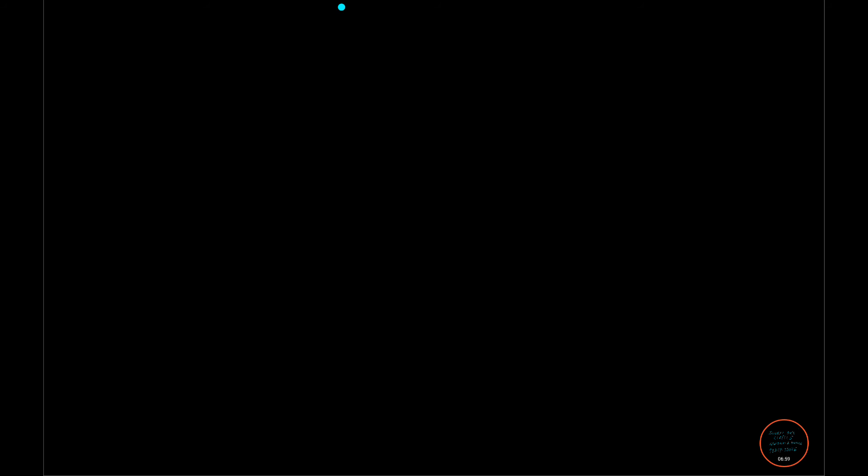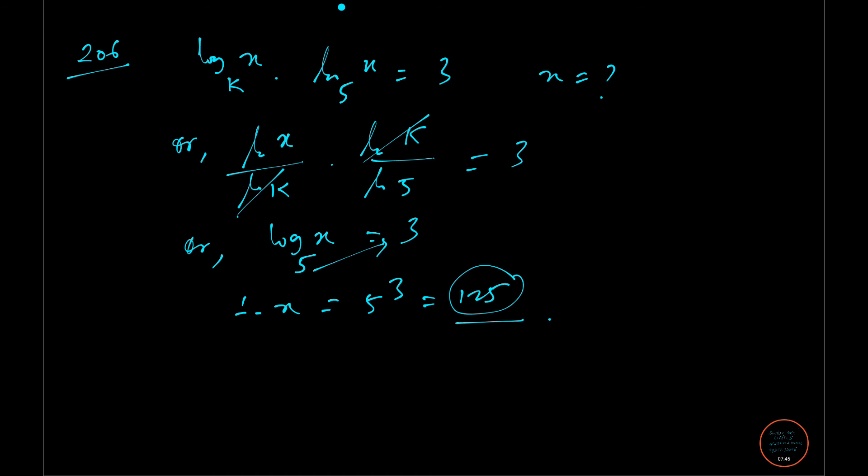Now I am proceeding to the next question. This one is associated with logarithm. Rahul from Jharkhand requested me to solve this question. It isn't that tough. Question number 206 is: log base k of x times log base 5 of k equals 3. Find x. Here it will be simply log x / log k times log k / log 5. These two will cancel out, so log x / log 5, which is log base 5 of x equals 3. So x equals 5³, which is 125. You get your answer very easily.